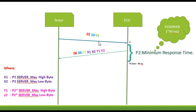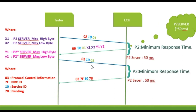When you send the Diagnostic Session Control, sub-function is 0x00 and then you will get a positive response. Here I have mentioned X1, X2 and Y1, Y2 which are nothing but P2 server and P2 star server high byte and low byte. In this example, the tester requests Diagnostic Session Control default session, and within 50 milliseconds everything is processed perfectly, so the tester gets a positive response.